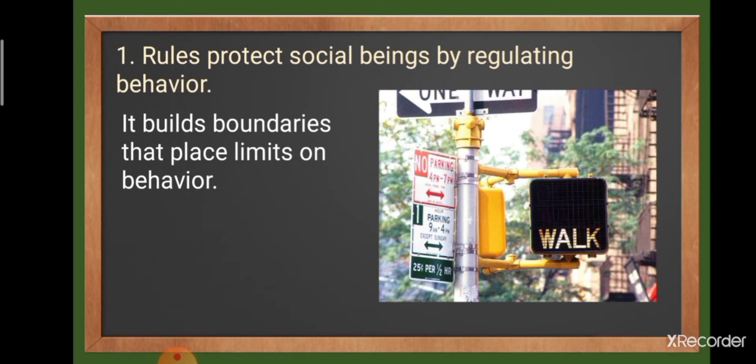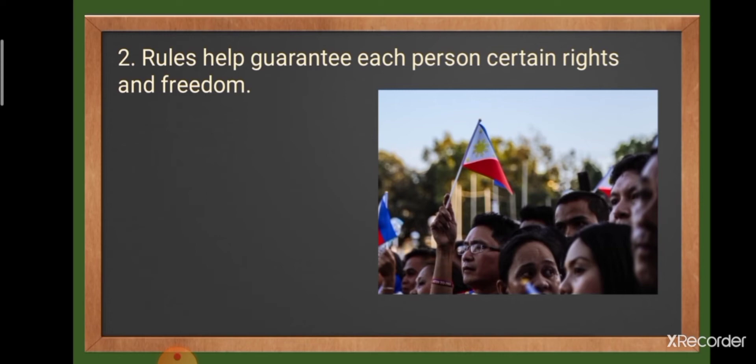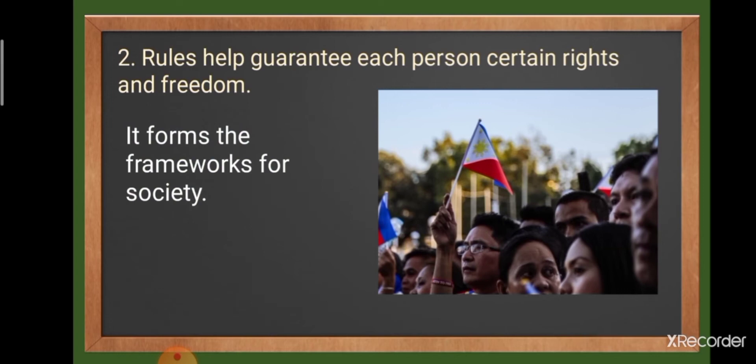Second, rules help guarantee each person certain rights and freedom. Rules form the framework for societies. Nations are generally nations of laws, and governing principles are outlined in what is called the Constitution. This Constitution guarantees the rights and upholds the liberty of its citizens. Rules on divisions of power, as well as checks and balances, aim to protect individual liberty.